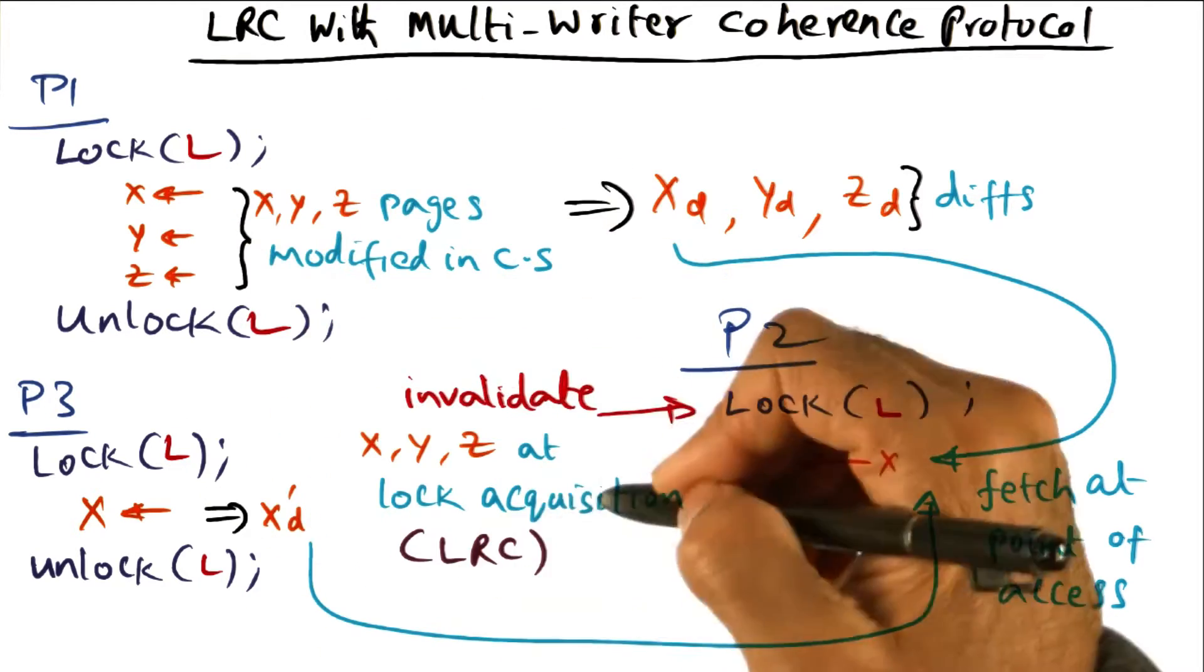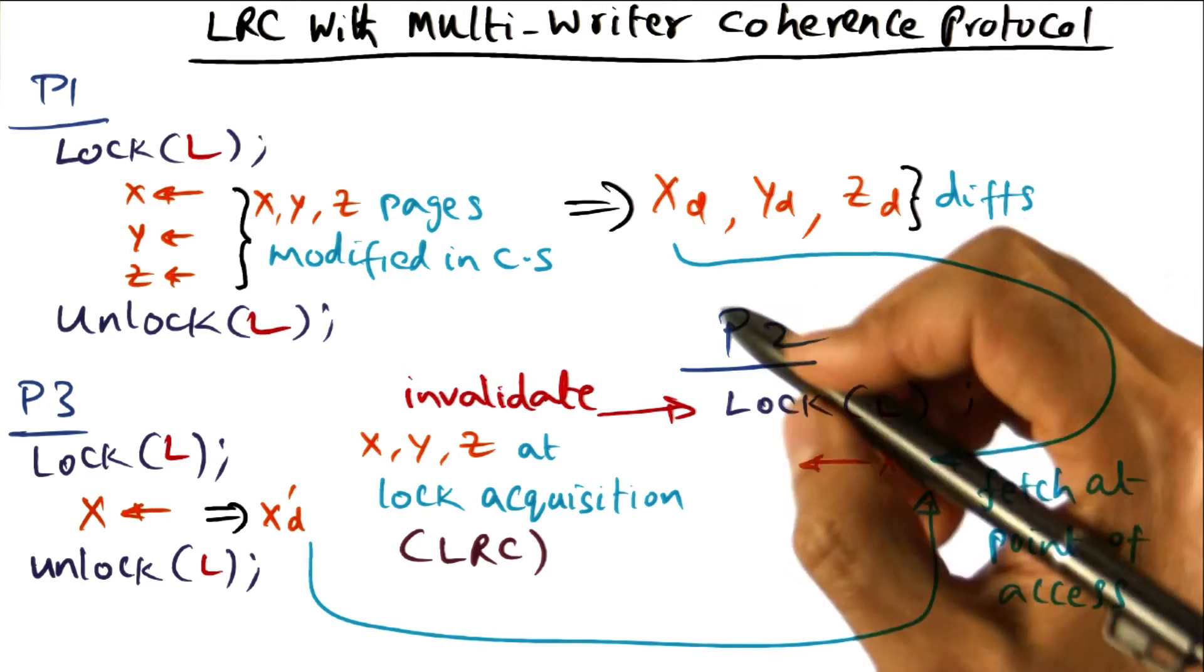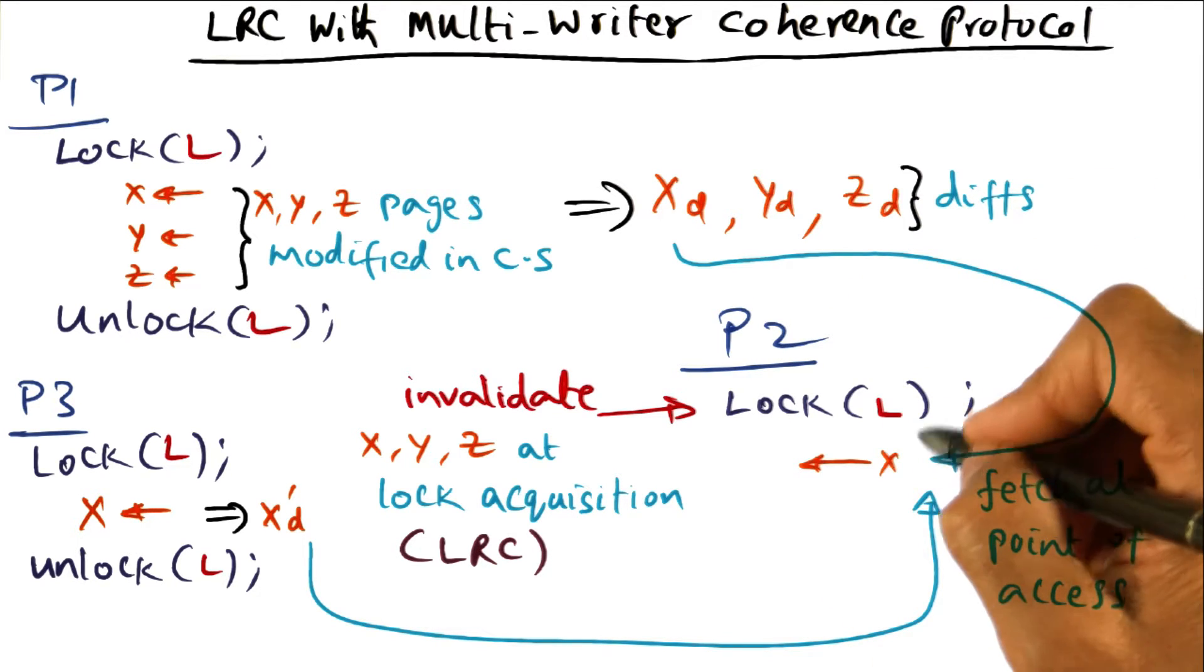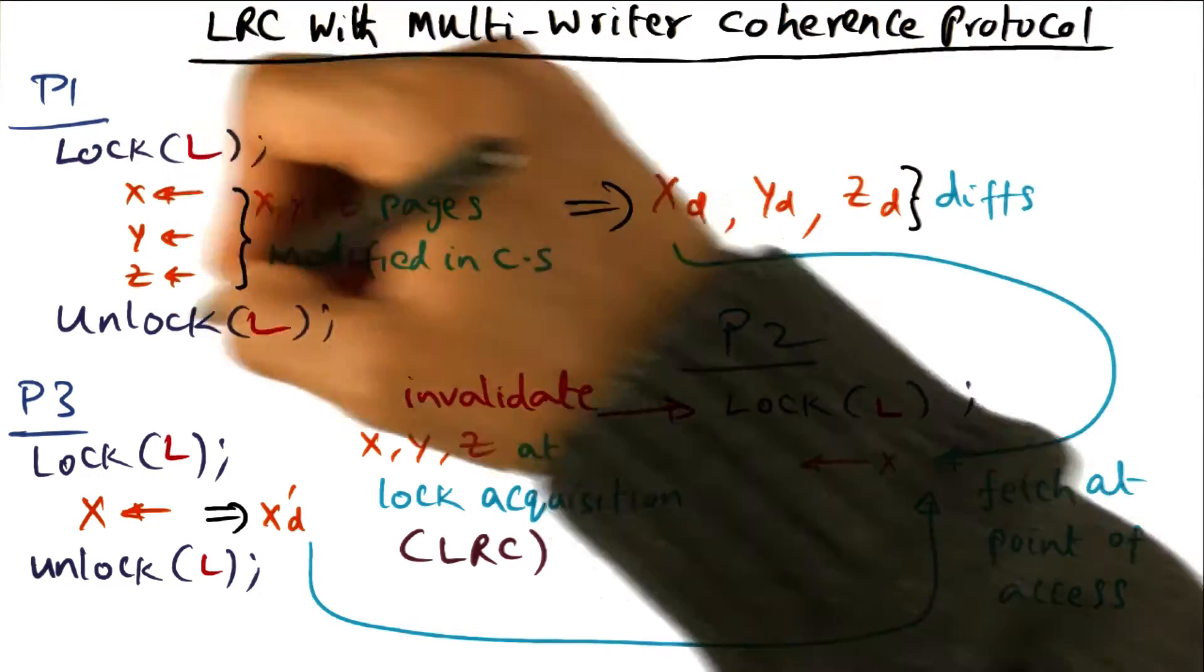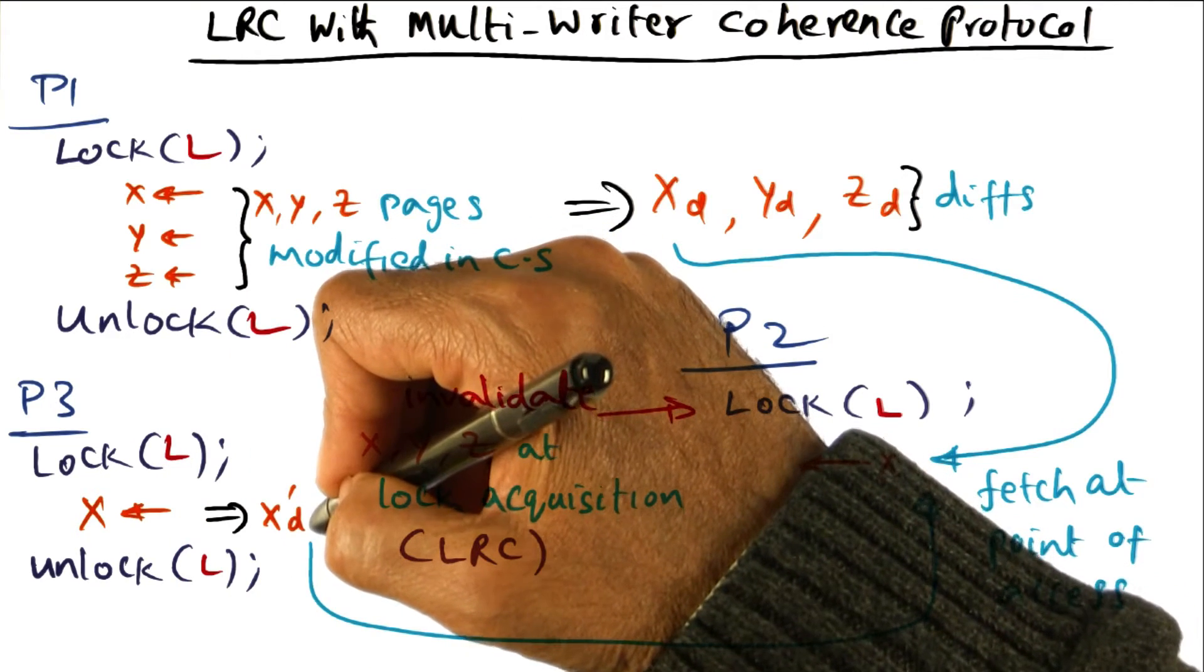Because all of these locks are the same, the DSM software knows that now there are two diffs associated with this lock L. One diff is with the processor P1, and another diff is residing with processor P3.